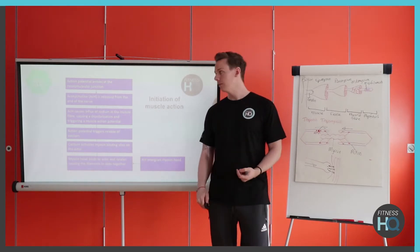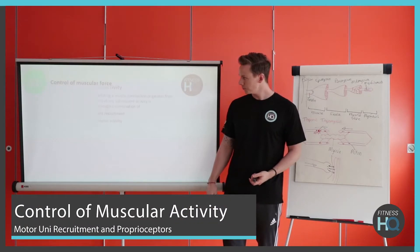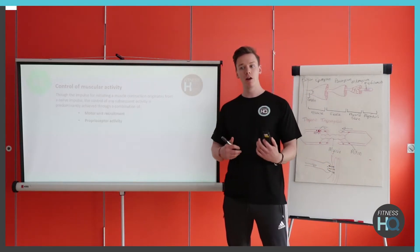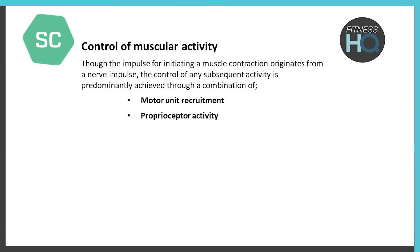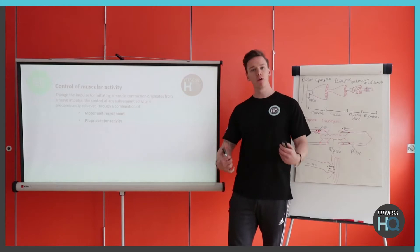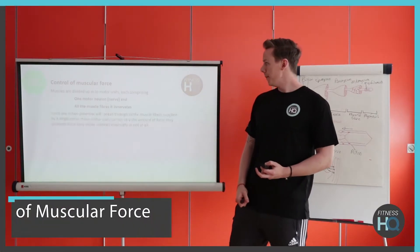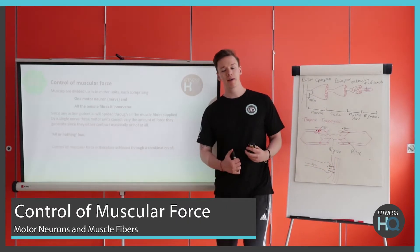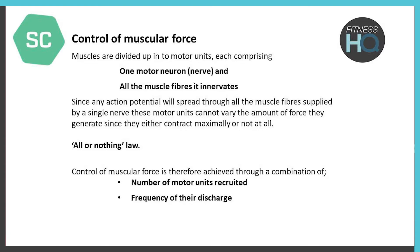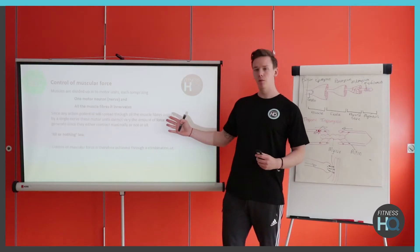Moving on to controlling muscles — going back to motor units. The contraction originates from a nerve impulse, and the force of contraction will depend on how much force we need. There are two main things to look at: motor unit recruitment, which we've covered, and the new topic of proprioceptor activity. Regarding the all-or-nothing law: if a motor unit is fired up, that neuron and all its fibers will innervate to create a force — it's either on or off. For more information, go back to the Level 2 nervous system unit.